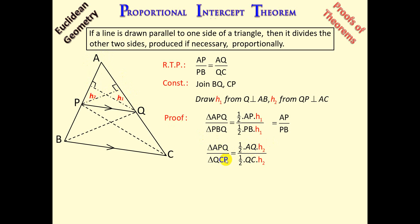And the area of triangle QCP will be half the base, which is QC, times the height, which we have drawn to be H2. Notice the halves cancel off, the H2s cancel off, and we're left with AQ over QC, which is what we want on the right-hand side.